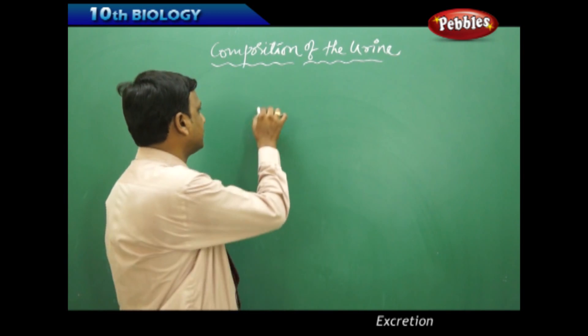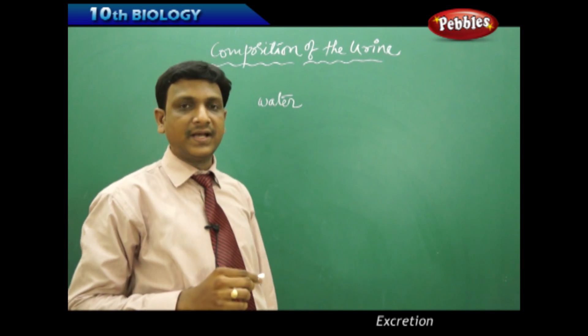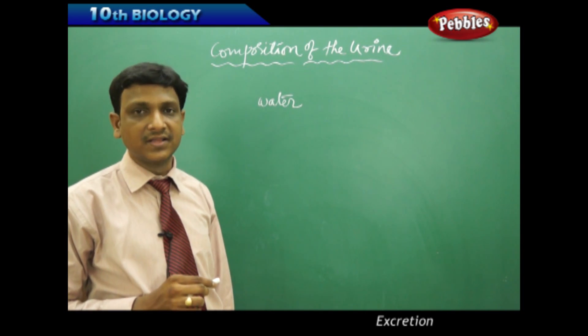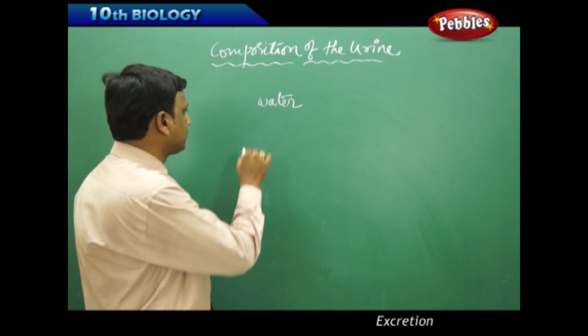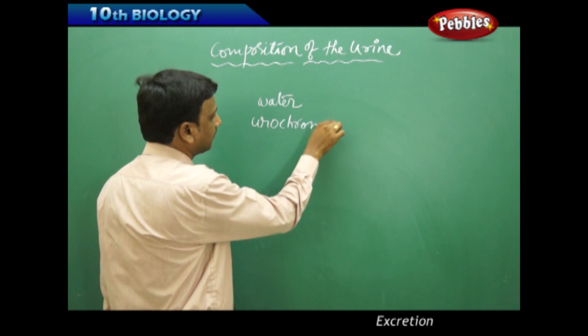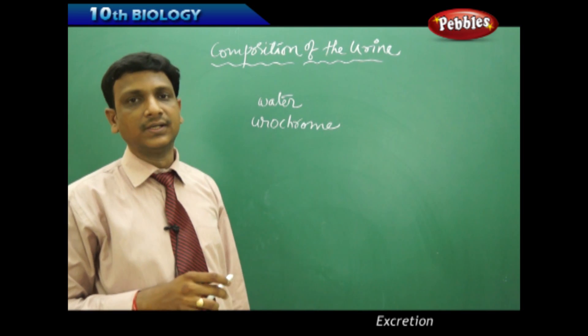Urine mostly contains water. It also has some specific color because of a pigment which is excreted in the urine. A pigment called urochrome gives the straw color, light yellow color to the urine.